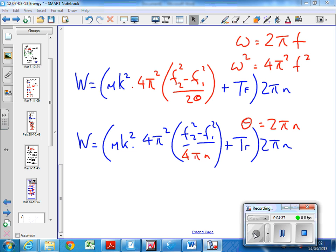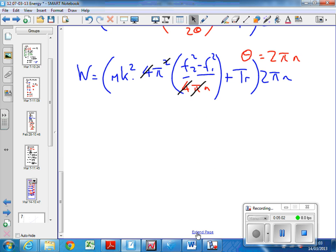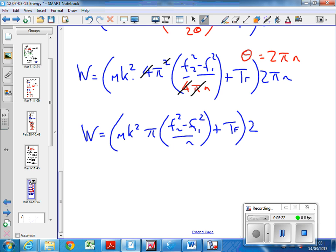So now, substituting in 2 pi instead of theta, we get this, where we get 4 pi n on the bottom. I can do a bit of cancelling now. The 4s cancel here, and one of those pi's cancels one of these pi's. So that simplifies it slightly. It's still complex, but we end up with this function: work done equals mk squared times pi f2 squared minus f1 squared over n plus the friction torque times 2 pi n.